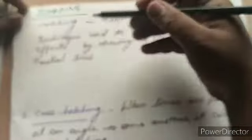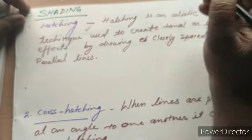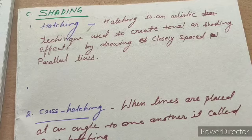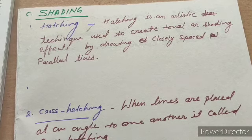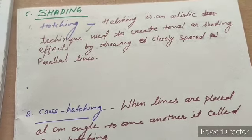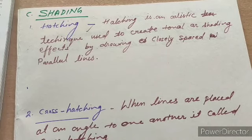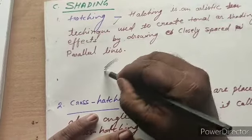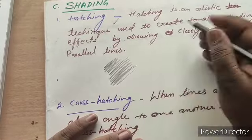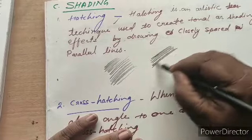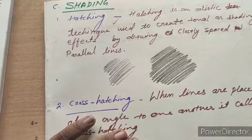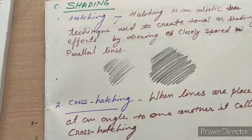The third one is shading. The first shading technique is hatching. Hatching is an artistic technique used to create tonal or shading effects by drawing closely separated parallel lines — like this. It is called hatching.